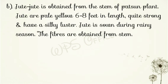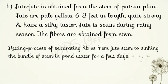The fiber from the stem is obtained by retting — पानी में सड़ाना। Retting is the process of separating fibers from the jute stem by sinking the bundle of stems in pond water for a few days. Patsan के पौधे के तनों को काटकर, उन्हें bundle बनाकर, तालाब के ठहरे हुए पानी में डाल दिया जाता है। कई दिनों तक सड़ने के बाद उसकी ऊपरी परत सड़ जाती है और फिर इन्हें सुखाकर jute का रेशा प्राप्त कर लिया जाता है।